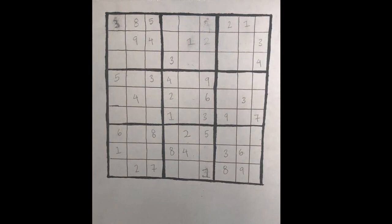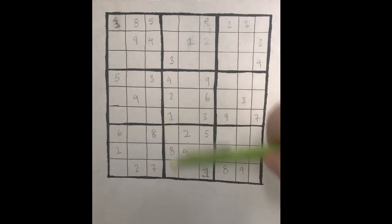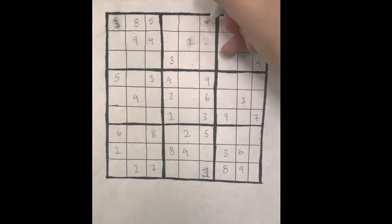Therefore, 4 can be localized to this position, this position, or this position. Now if we look across the columns, we can see that 4 cannot be located here or here because of its presence in this column and this column. Therefore, we can localize the final position of 4 to here.